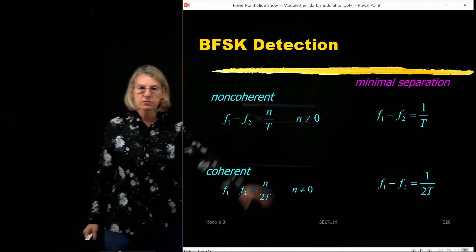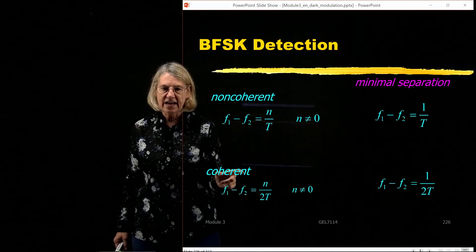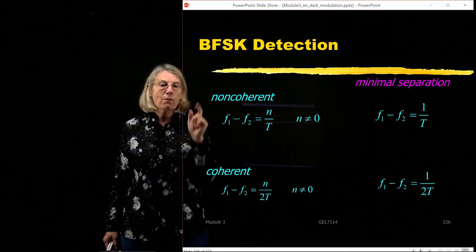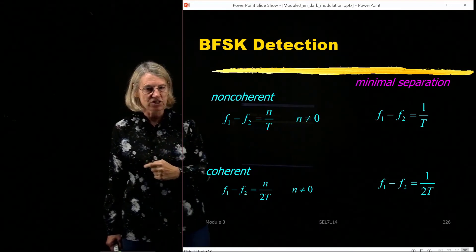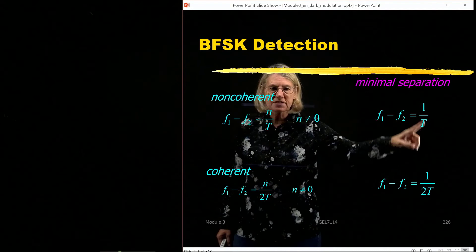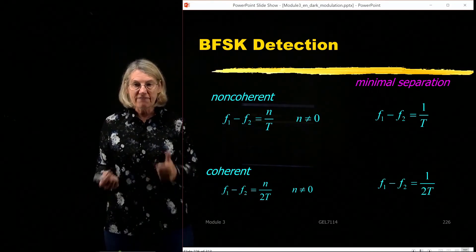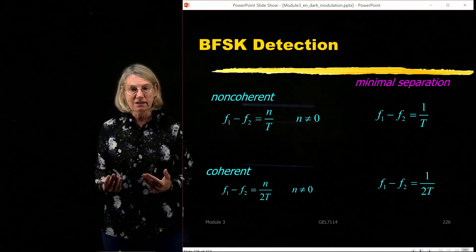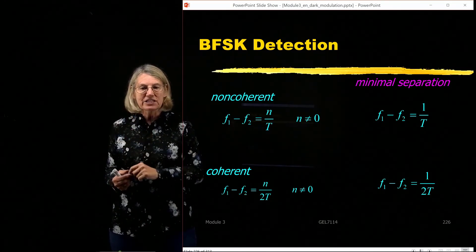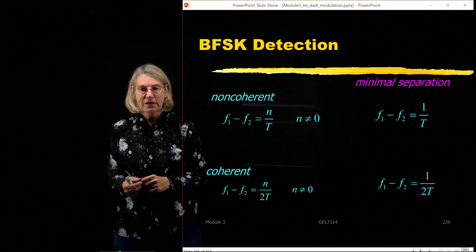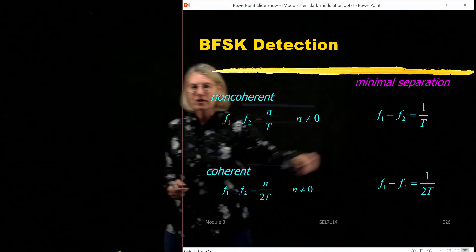So let's summarize these results. We found that for non-coherent detection the separation had to be a multiple of 1 over t whereas for coherent detection it had to be a multiple of 1 over 2t. So now I want the minimal separation I want these to be as close as possible so now I'm going to choose n equal 1 because that will give me the minimal separation. So for non-coherent detection the minimal separation is 1 over t but for coherent detection it's 1 over 2t. So the important thing is first we've quantified for FSK how tightly can we pack them and we've also seen what is the cost of going from coherent to non-coherent. We saw the cost was 1 dB in terms of the bit error rate versus the signal-to-noise ratio but now in terms of spectral efficiency we can see that the coherent is more spectrally efficient we can pack them tighter than we could in the non-coherent case.